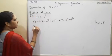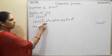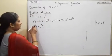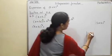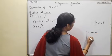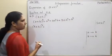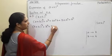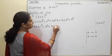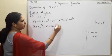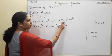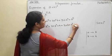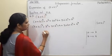Now I'll write (k+4) cube equals. Comparing with the formula, a means k and b means 4. So in the place of a we write k, and in the place of b we write 4. Applying the formula: a cube is k cube, plus 3 into k squared into 4, plus 3 into k into 4 squared, plus 4 cube.